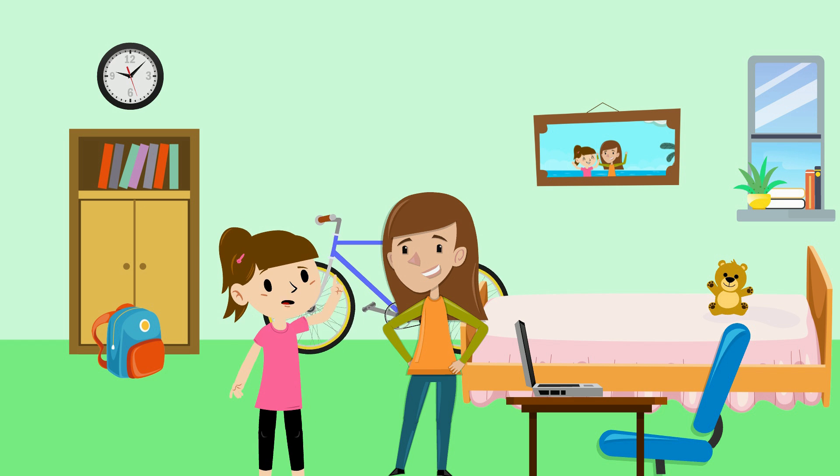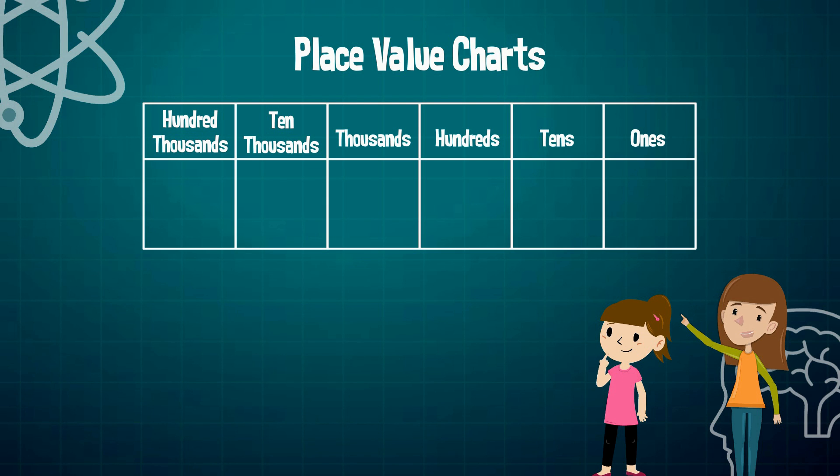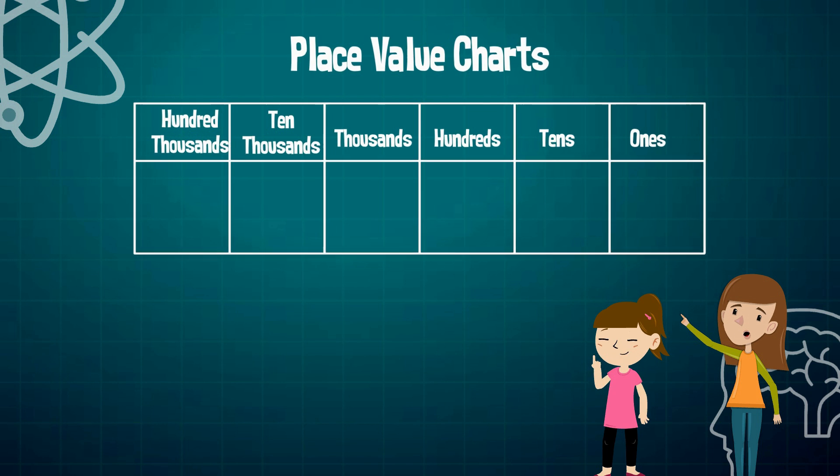Okay, I'm ready. The last time we were in the thinking tank, we went over the place value chart. Today we will be going over how to compare and order numbers.